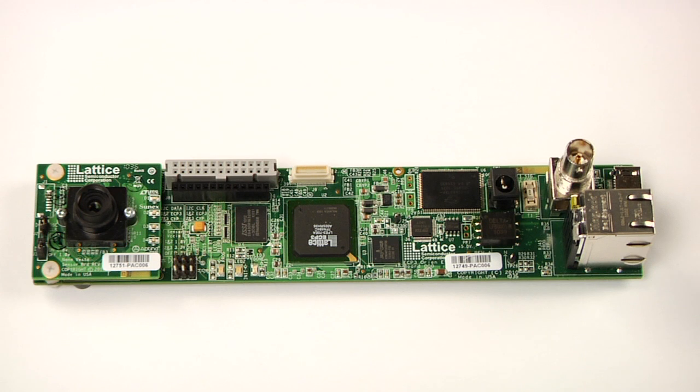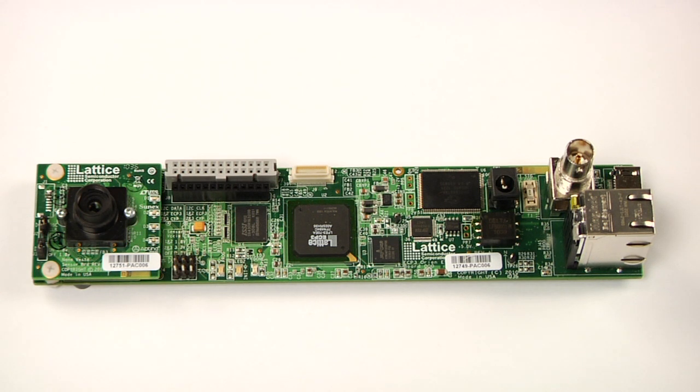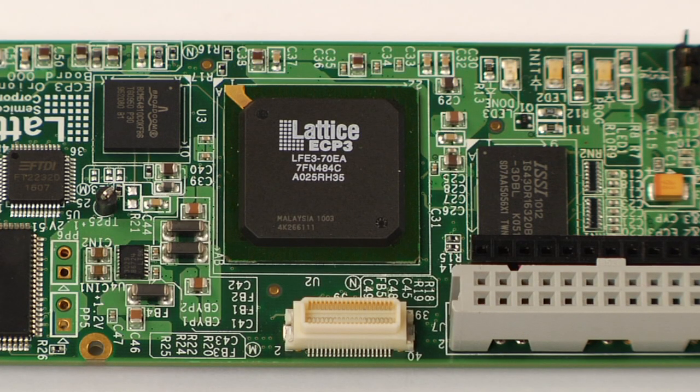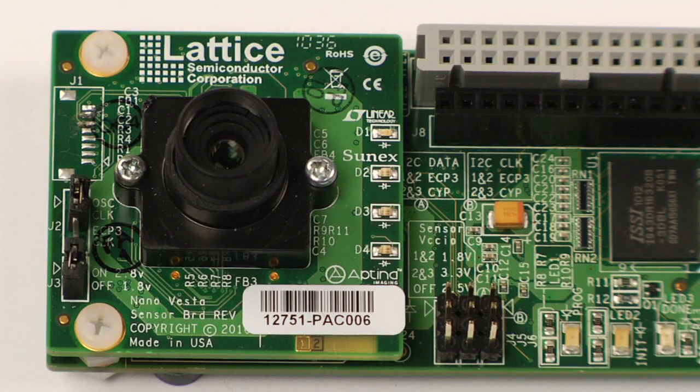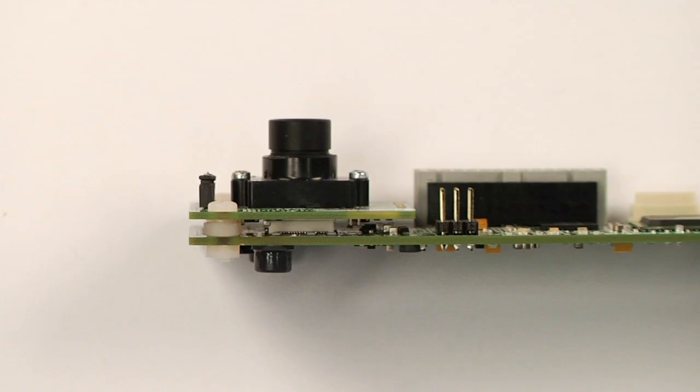The kit consists of two boards, a long main board with a Lattice ECP370 FPGA and a small square sensor board. For ease of use as a development kit, the kit ships with the sensor board mounted flat on the main board.